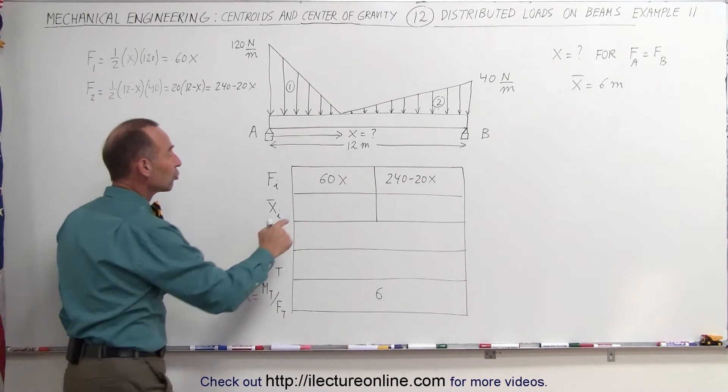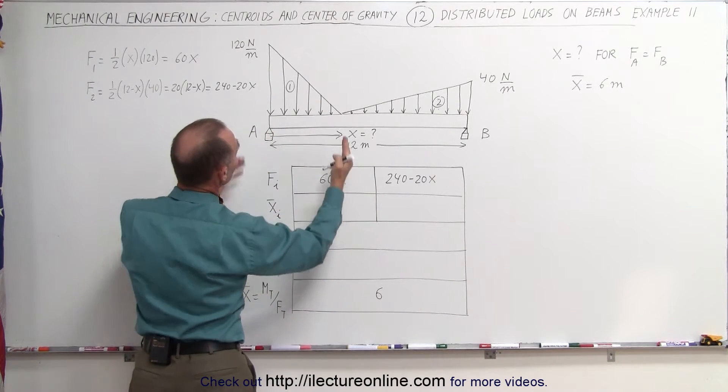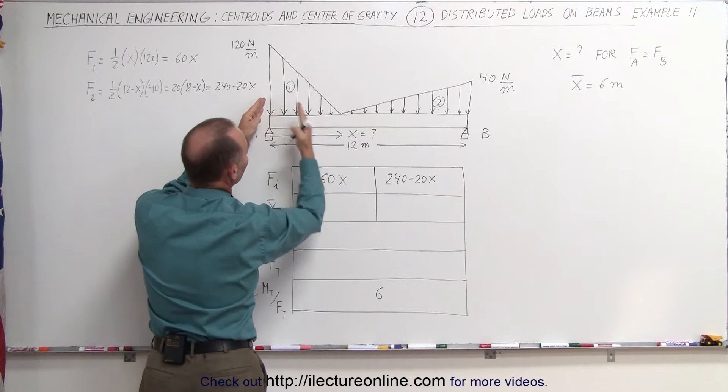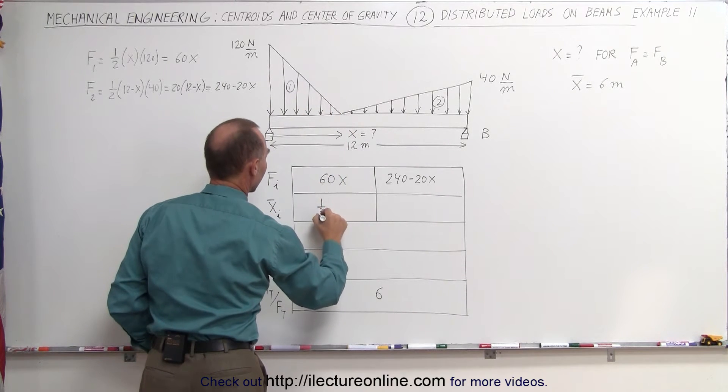Now we need to find the centroids of each of those two segments. For the first one, it's easy, it's a triangular segment, we know it's one-third the distance from here to there. One-third x goes in here.